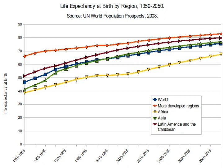Life expectancy is a statistical measure of the average time an organism is expected to live, based on the year of its birth, its current age, and other demographic factors including gender.